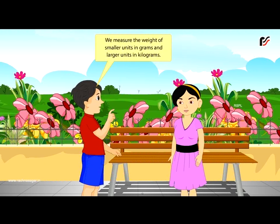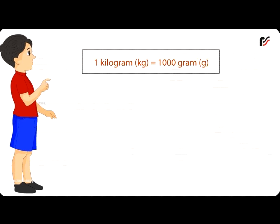We measure the weight of smaller units in grams and larger units in kilograms. And 1 kg is equal to 1000 g.